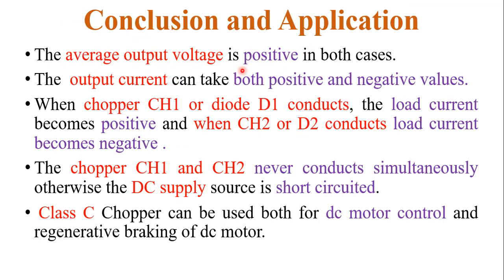In conclusion, the average output voltage is positive in both cases, but the output current can take both positive and negative values. When CH1 or D1 conducts, load current is positive; when CH2 or D2 conducts, load current is negative. CH1 and CH2 never conduct simultaneously, otherwise the DC supply is short circuited. Class C chopper can be used both for DC motor control and regenerative braking of a DC motor.